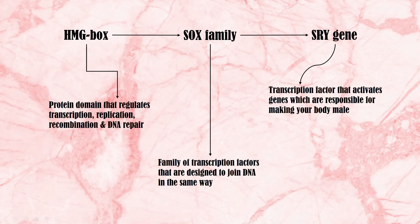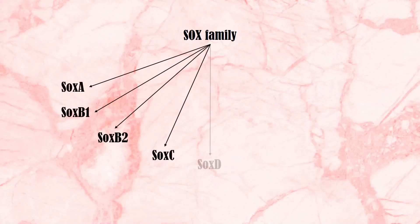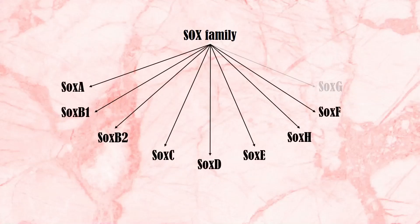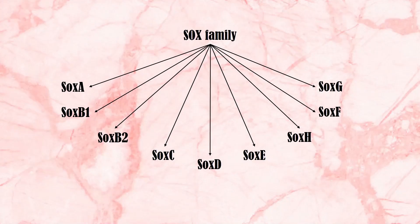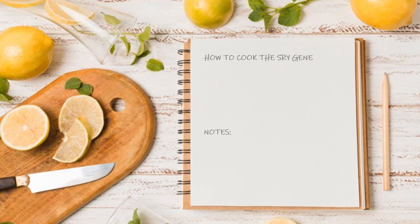All the genes in this family are designed to join DNA in the same way, and they have a similar structure. SOX genes are classified into groups, and the SRY protein belongs to the SOXA group. The structure of the SRY gene is very simple — it has one exon and no introns.